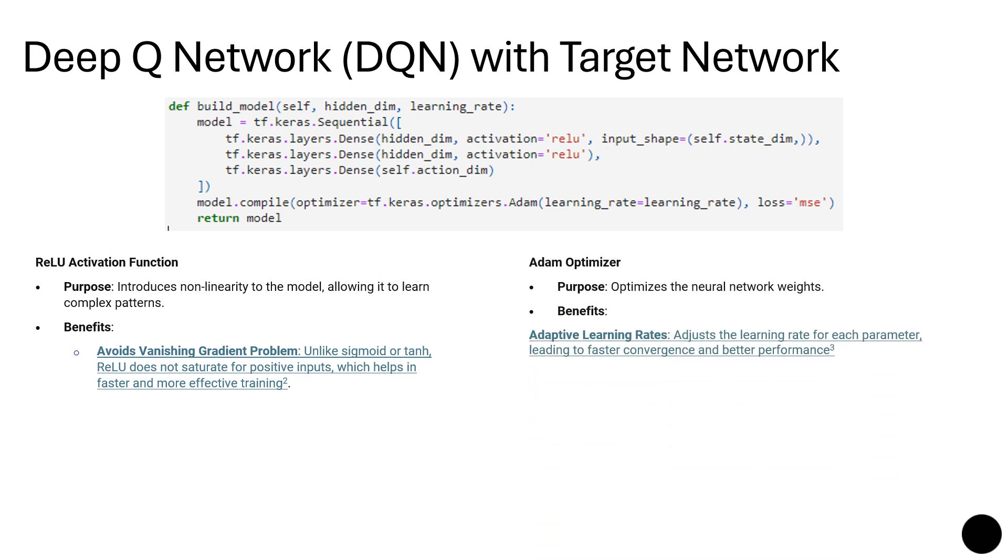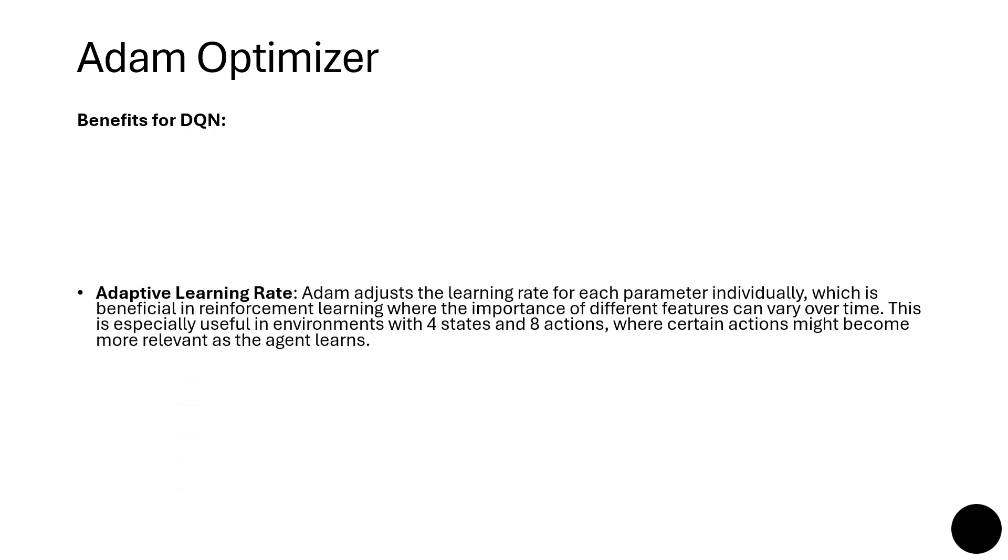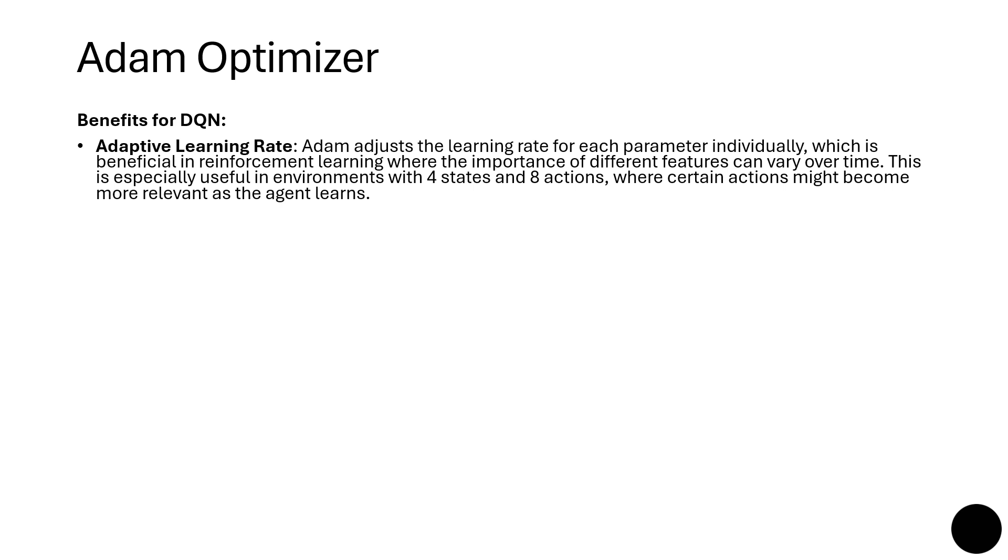Then we have the Adam optimizer for the optimization of the networks. Its benefit is that it's adaptive. It adjusts the learning rate for each parameter leading to faster convergence and better performance. Then we have the mean squared error. This measures the difference between predicted and target values. It provides a smooth gradient for optimization which helps in stable training. The benefits of the Adam optimizer: it adjusts the learning rate for each parameter individually, which is beneficial in reinforcement learning where the importance of different features can vary over time. This is especially useful in environments with four states and eight actions, where certain actions might become more relevant as the agent learns.